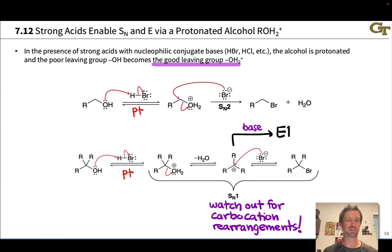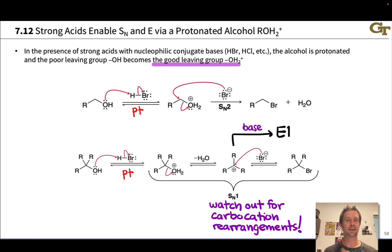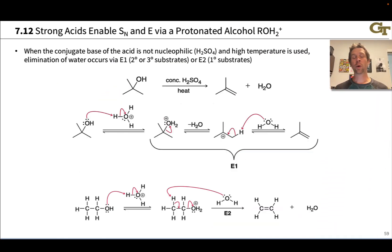One thing to watch out for when going through a carbocation is carbocation rearrangements. The overarching moral is that in the presence of a strong acid capable of protonating the alcohol OH group, we generate the good leaving group OH₂⁺, which can depart to form a carbocation when that carbocation is relatively stable, or can directly enable SN2 in the case of a primary substrate. The conjugate bases Br⁻, Cl⁻, and I⁻ are common nucleophiles in this context. When the acid used does not have a nucleophilic conjugate base — H₂SO₄ being the classic example — elimination occurs, with water serving as the base in concentrated H₂SO₄.